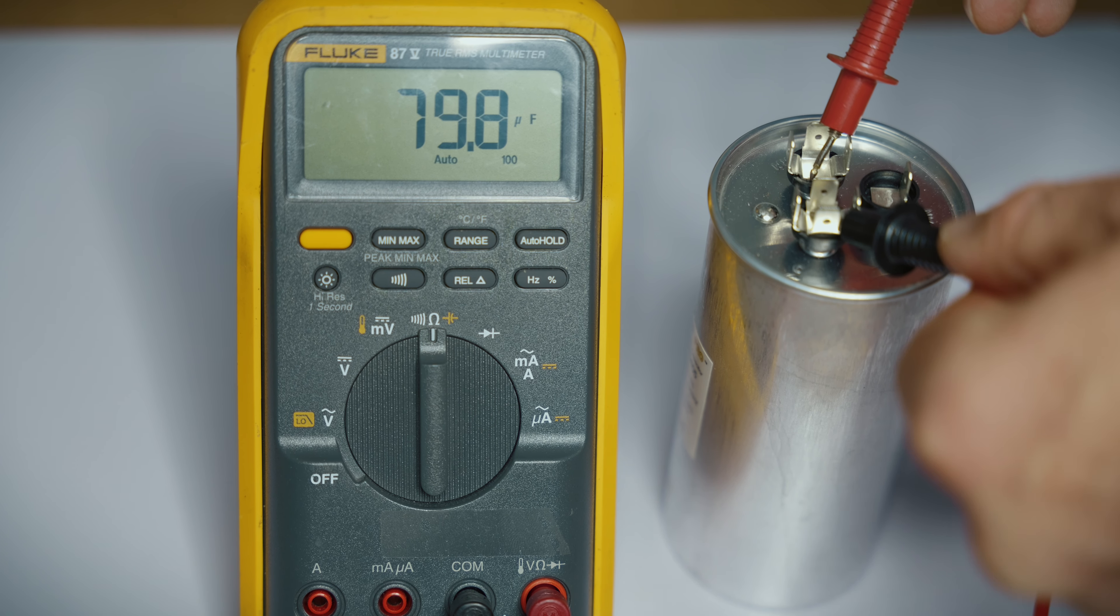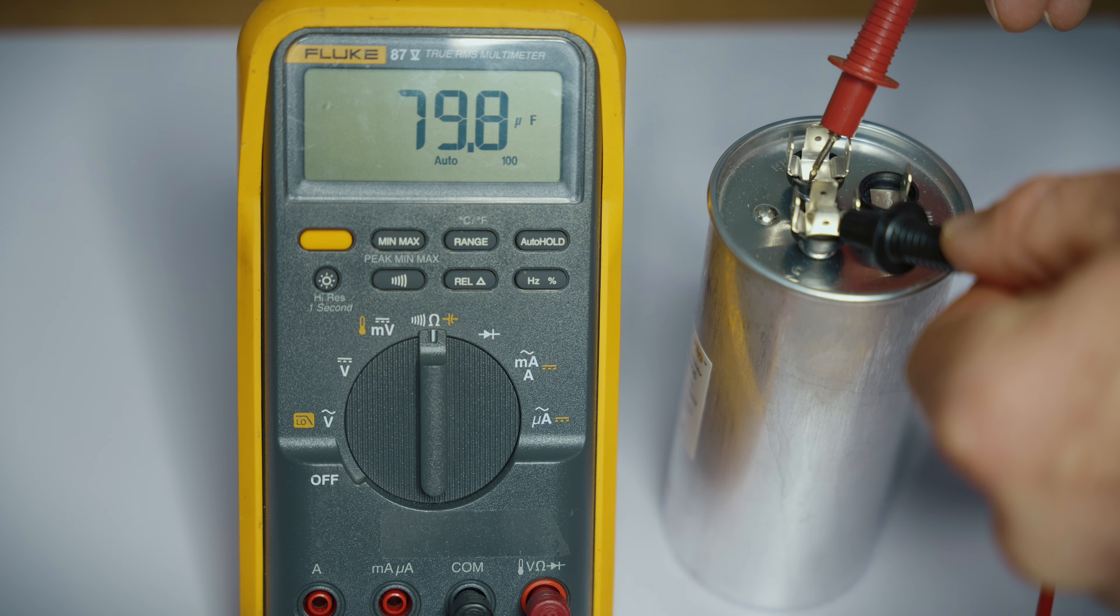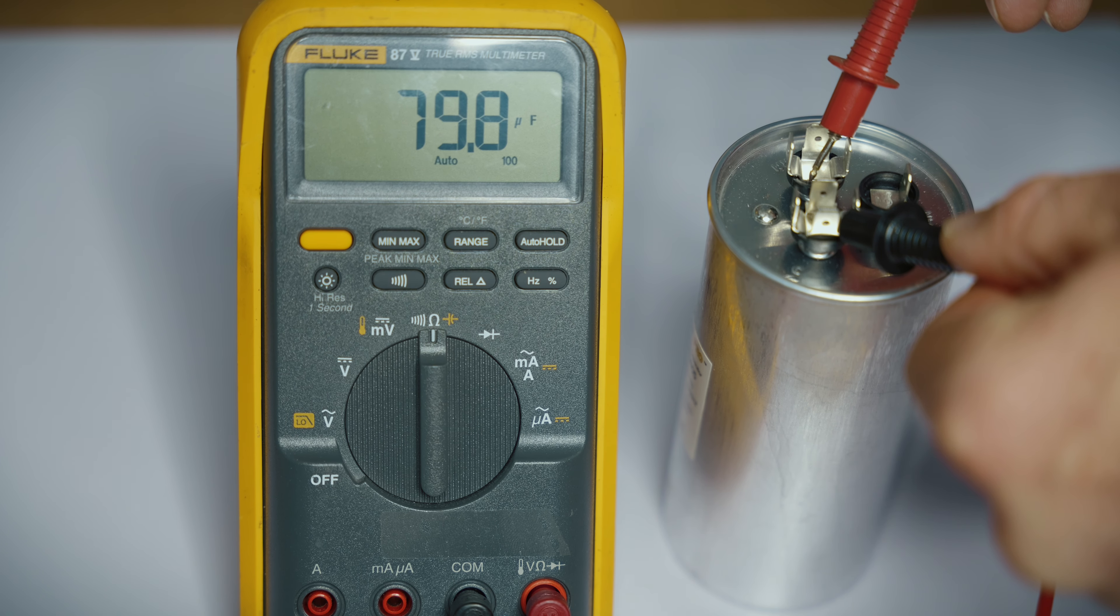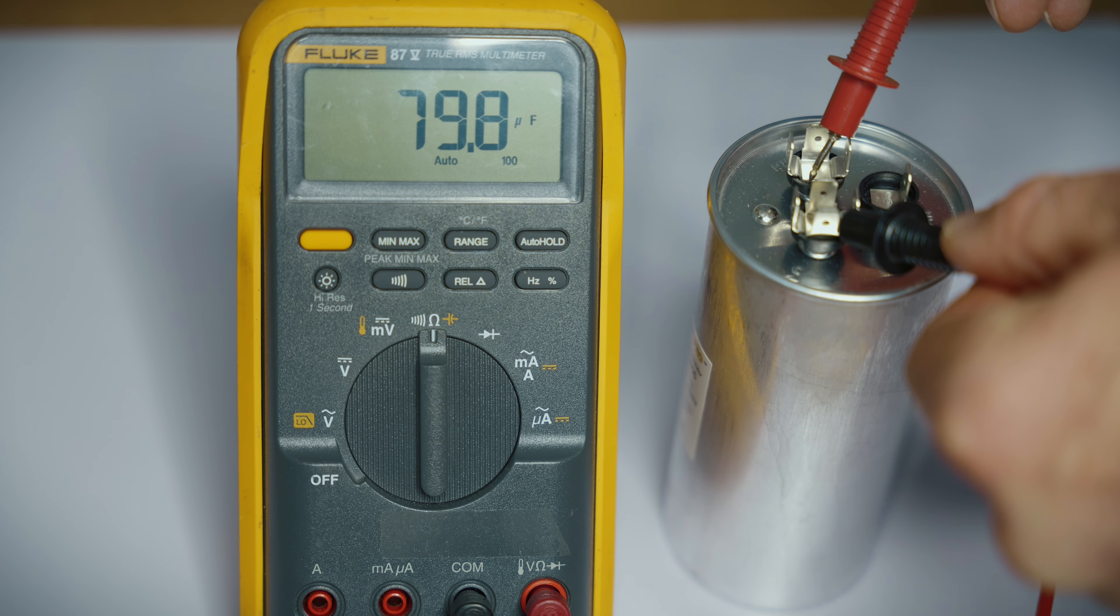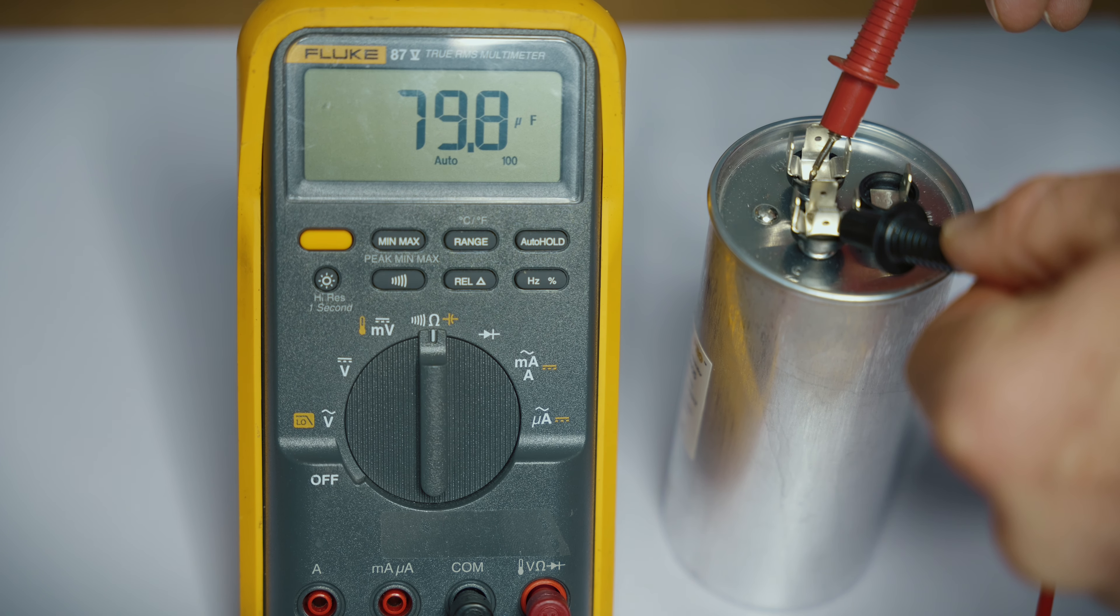To check the capacitor, we're first going to flip it to the capacitor setting, and we need to hit our shift button. So this capacitor is rated for 80 plus or minus 5. So we're going to go across our compressor to the Herm tab. We're getting 79.8, which is not quite 80 microfarads, but it's close. It's definitely within that 5%. So it is good. And that's how you check a capacitor.